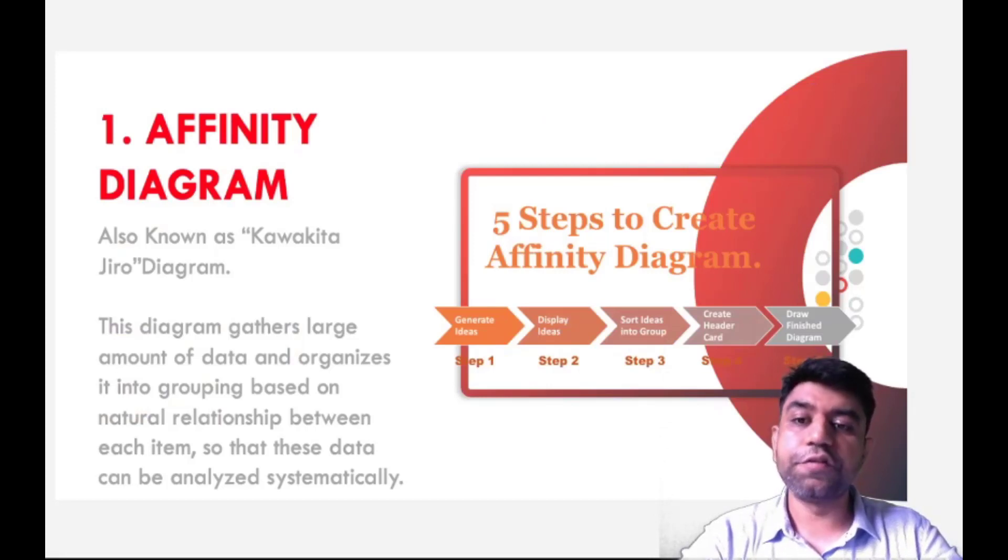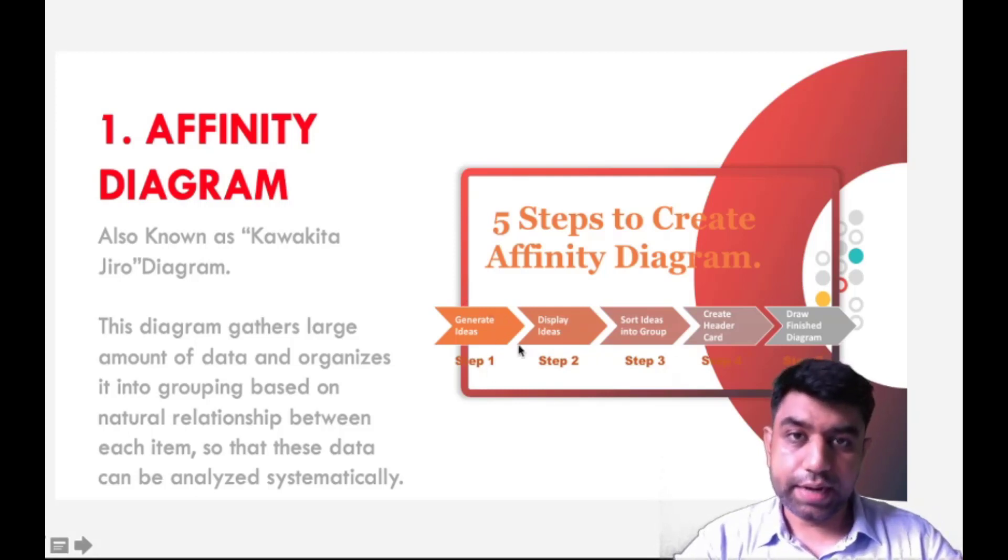The first one is Affinity Diagram. Affinity Diagram is also known as Kawakita Jiro Diagram. The diagram actually gathers a large amount of data and organizes into small groups which are based on a natural relationship, so that this data can be systematically analyzed. How to prepare that Affinity Diagram? First step is to generate an idea, discuss about one idea. Then display that idea on some board or chart, sort different ideas by giving different activities to the employees. Create a header chart, and lastly, draw a finished diagram.